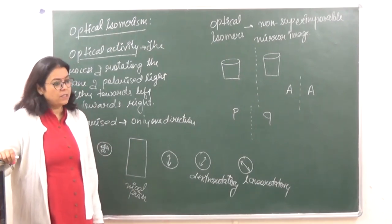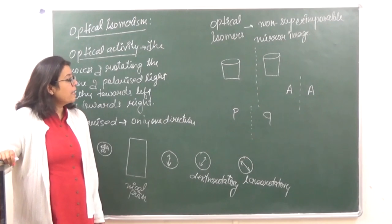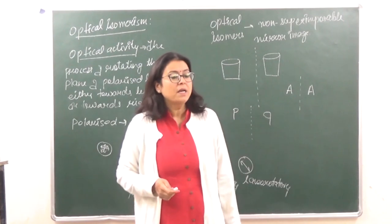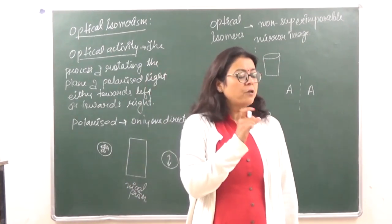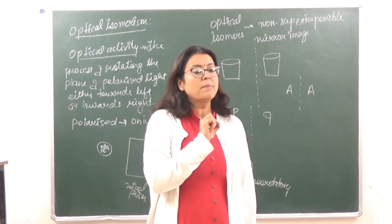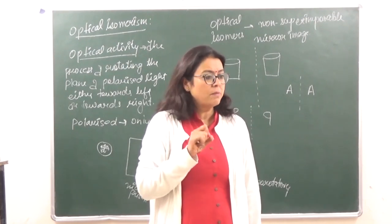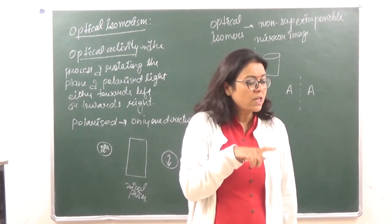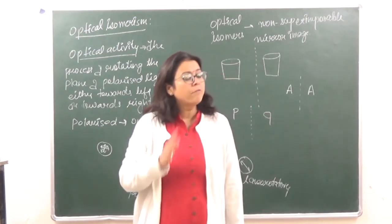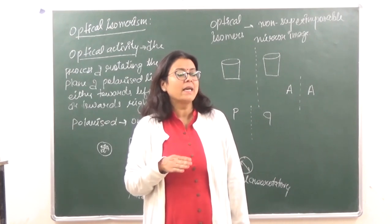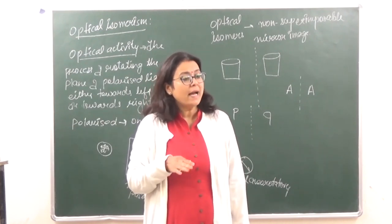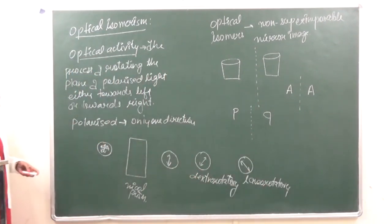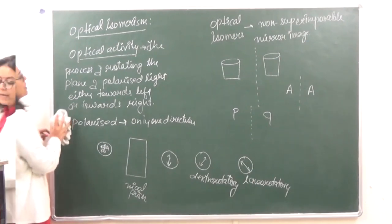Compounds which are non-superimposable mirror images are optically active. In organic chemistry, all carbon compounds that have four different groups attached to the carbon atom are optically active. Here we are pertaining to coordination compounds, so let's take examples of non-superimposable mirror images.